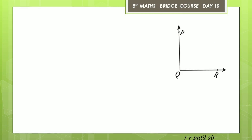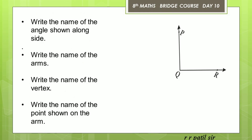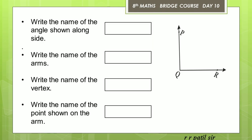Observe the figure given here and write the name of the angle shown alongside, as well as write the name of the arms of the given figure. Then write the name of the vertex and write the name of the point shown on the arm. You have the angle shown on the left and the angle shown on the right. The arms are identified on the left. The vertex is the first common point, and the point shown on the arm is also identified.